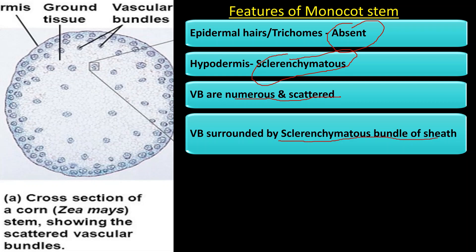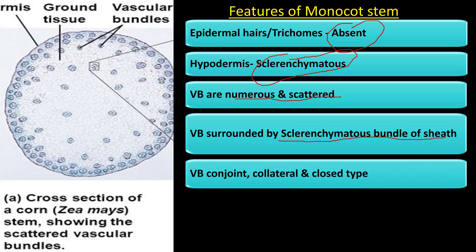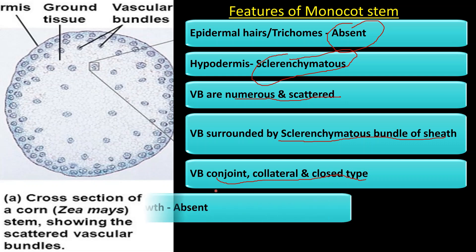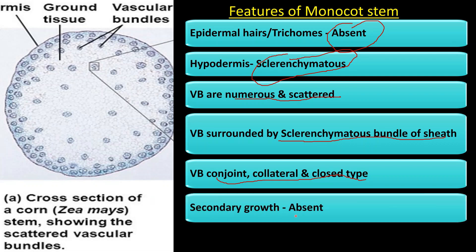Vascular bundles in monocot plants are conjoint, collateral, and closed type. There is no cambium between xylem and phloem, and therefore secondary growth is absent in monocot plants. Xylem shows a lysigenous cavity, which is a peculiar feature of monocot plants.